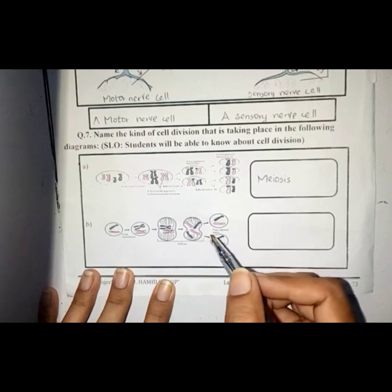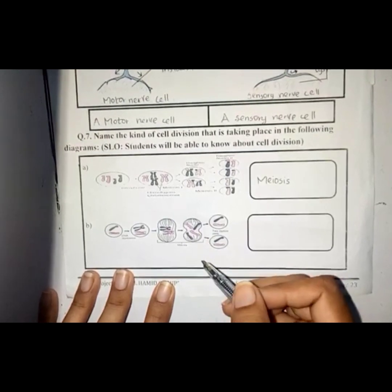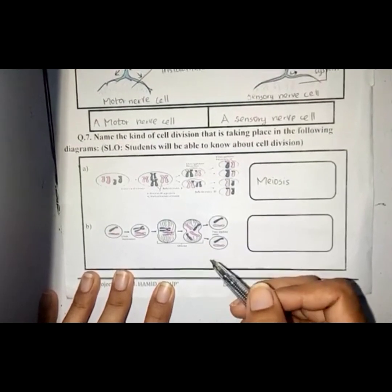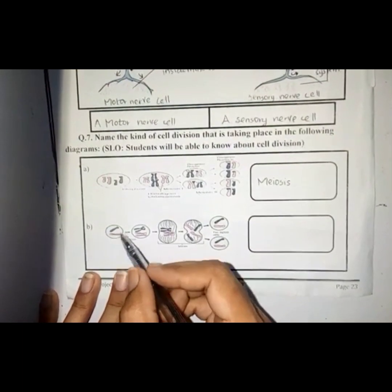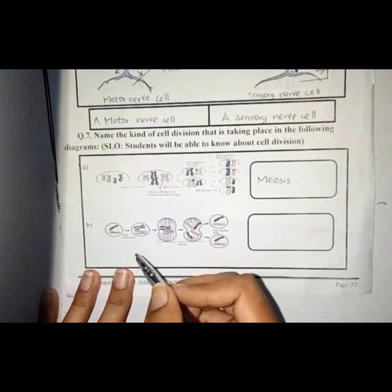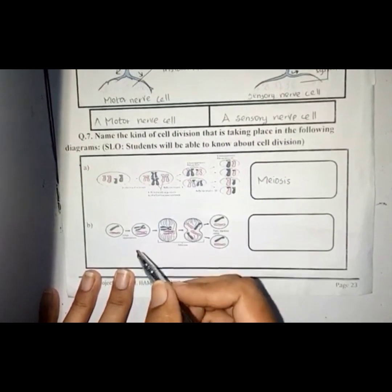Mitosis takes place in all the other cells of the body except the reproductive cells. During mitosis, the chromosomes will enter into the phase called interphase, and in that phase they will prepare themselves for cell division.